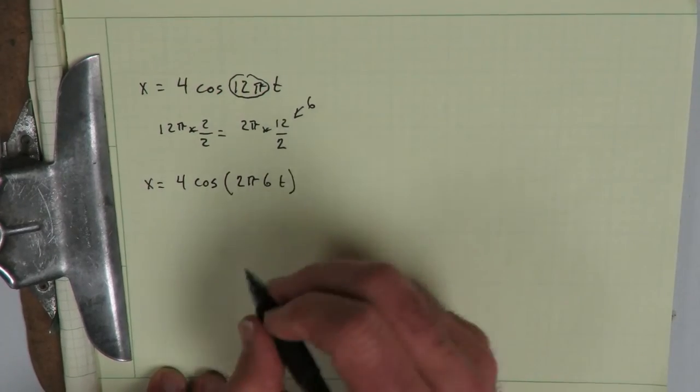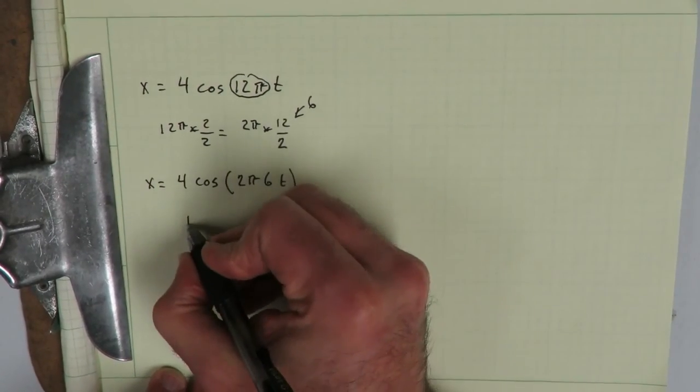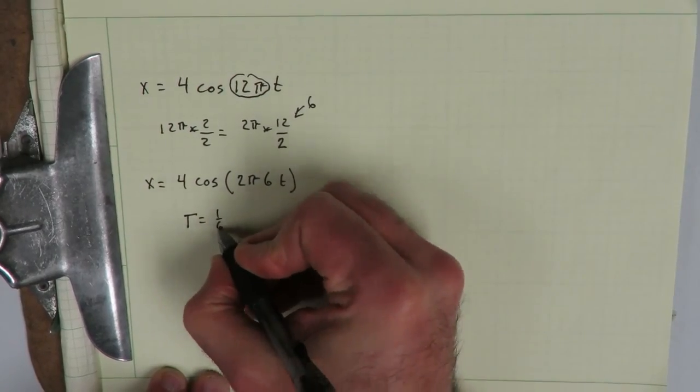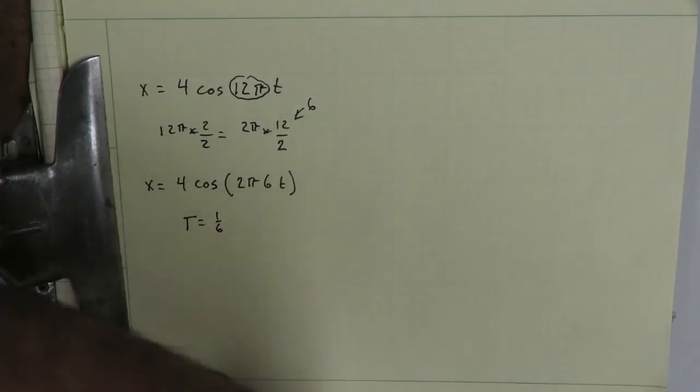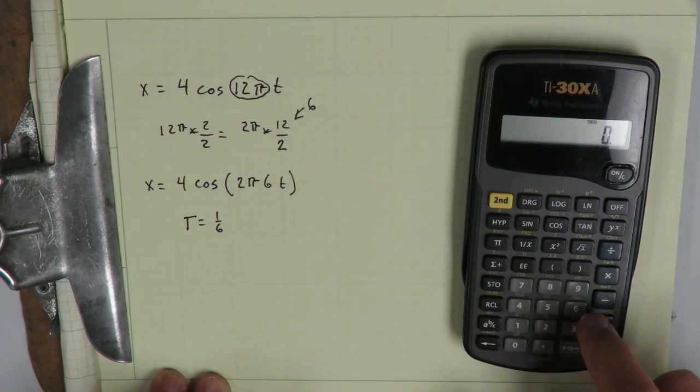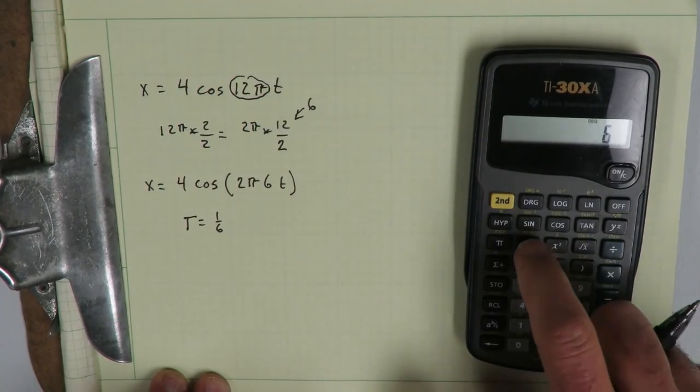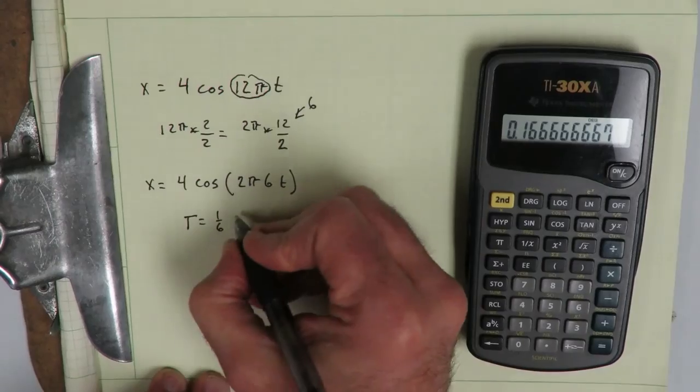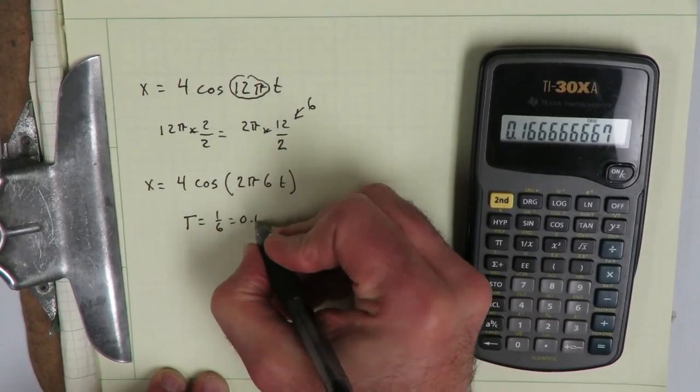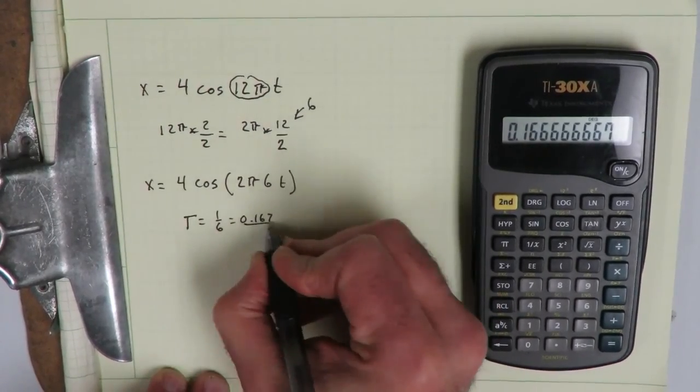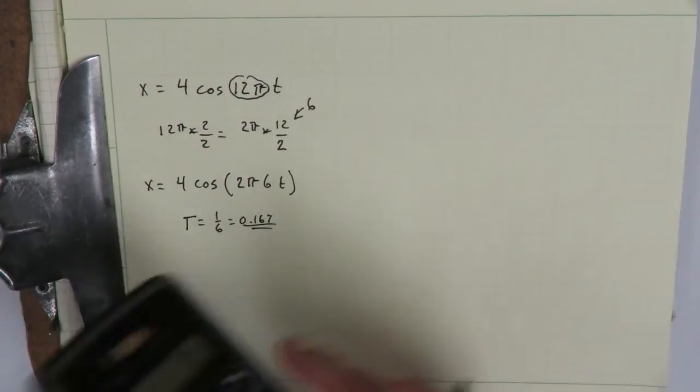If we need to know what the period is, we take the inverse of it and t is equal to 1 sixth. And whatever that turns out to be in our calculator, if we need a decimal, we can do that. So 1 over 6 equals 0.167 approximately. Very good.